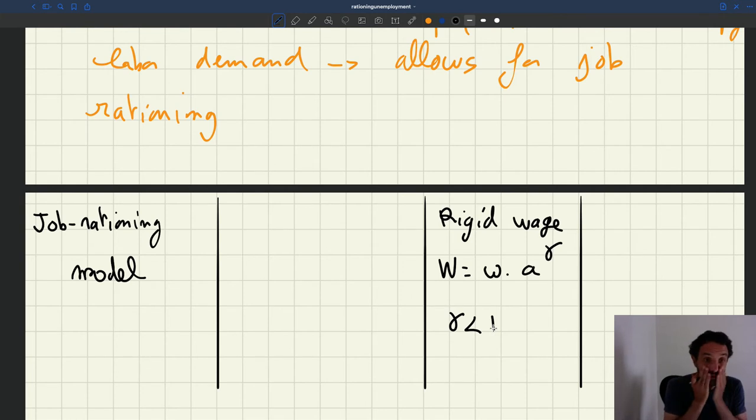The production function is going to be the difference between the job rationing model and the rigid wage model. The rigid wage model has a linear production function, and we know that leads to labor demand that's perfectly elastic with respect to tightness. That's horizontal. That's a key feature that makes the rigid wage model having no lack of jobs whatsoever.